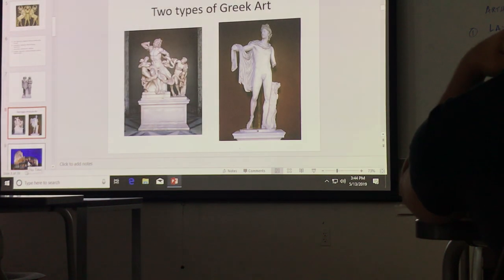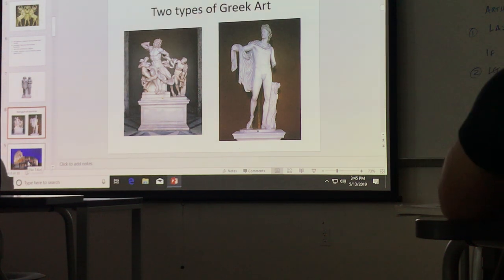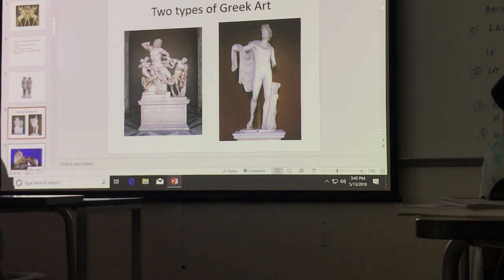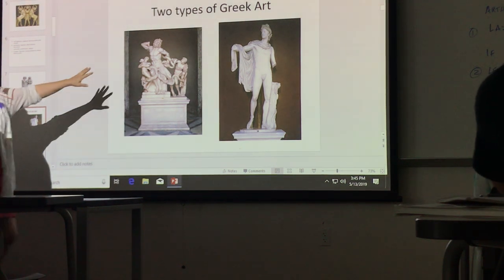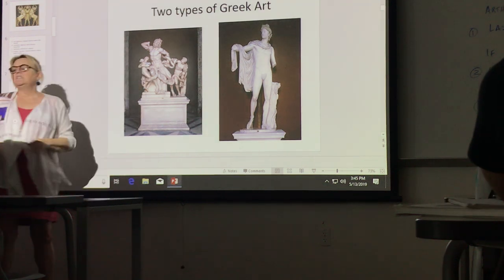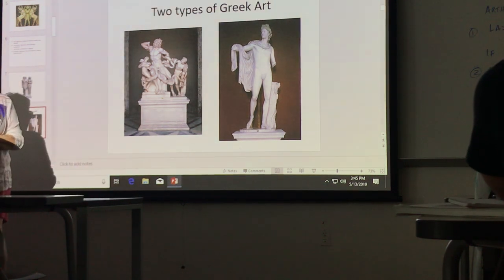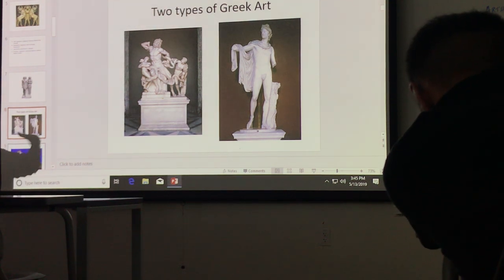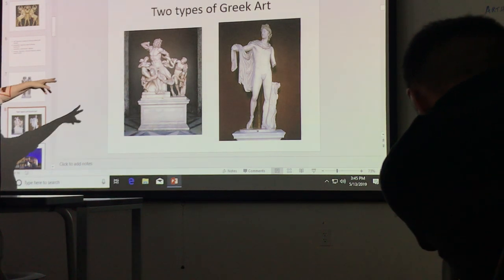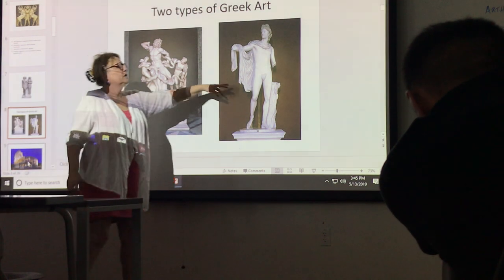What kind is Egyptian? Stiff, afterlife, funerary, figurative. The two types of Greek art are Hellenistic and Classical. Hellenistic art is more dramatic, highly textural, very dramatic, and complex — it's very hard to engineer. Classical is very simple in comparison.